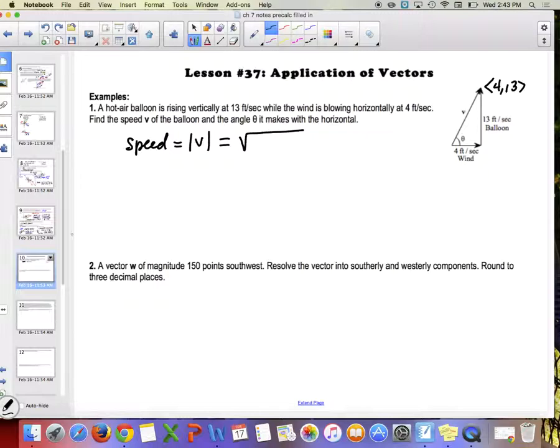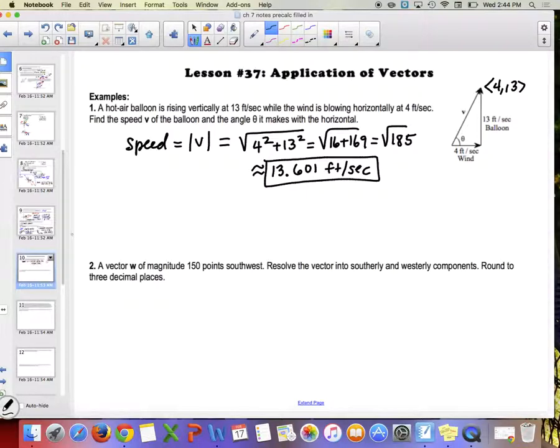So our speed is going to be the magnitude of v, which is going to be the square root of 4 squared plus 13 squared, which I went ahead and found for you. It's going to be the square root of 16 plus 169, which is the square root of 185. Now in these application problems we don't often say go the square root of 185 miles per hour, that's weird. So on these ones I will allow you to round to three decimal places, so it's going to be 13.601 feet per second.